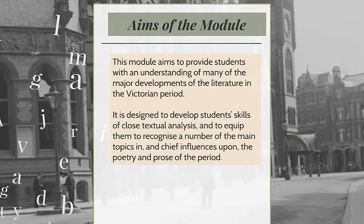This module aims to provide students with an understanding of many of the major developments of the literature in the Victorian period. It is designed to develop students' skills of close textual analysis and to equip them to recognise a number of the main topics in, and the chief influences upon, the poetry and prose of the period.